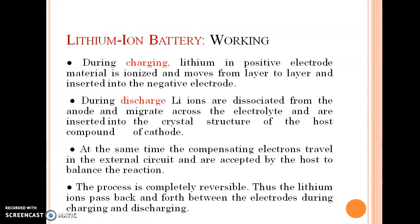During charging, lithium in the positive electrode material is ionized and moves layer by layer and is inserted into the negative electrode. During discharge, lithium ions are dissociated from the anode, migrate across the electrolyte, and are inserted into the crystal structure of the host compound of the cathode. At the same time, the compensating electrons travel through the external circuit and are accepted by the host to balance the reaction.